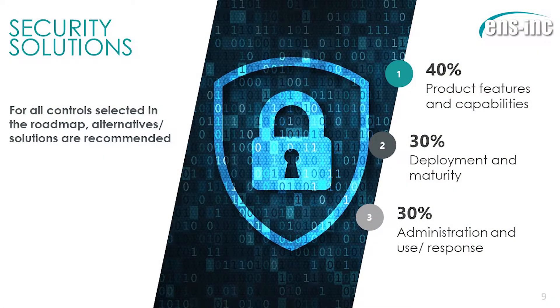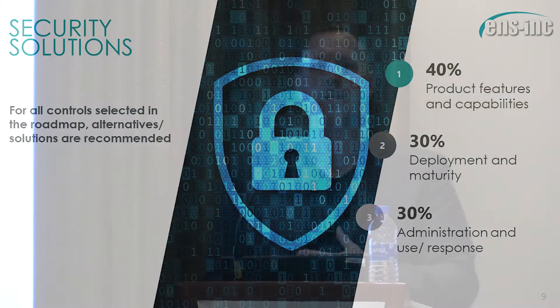Once you get that in place and you've considered the consolidation play, you can start evaluating what other tools to put in place. When evaluating tools, you're going to look at three things: the features and capabilities — does it meet the needs of the control I'm trying to address? How easy is it for me to deploy and build a maturity program around? And how easy will it be for my team to administer and respond to incidents it finds? I haven't talked about any specific product for this strategy. I don't care what tool you buy as long as it makes sense for your organization and meets the need of the strategy you put in place.